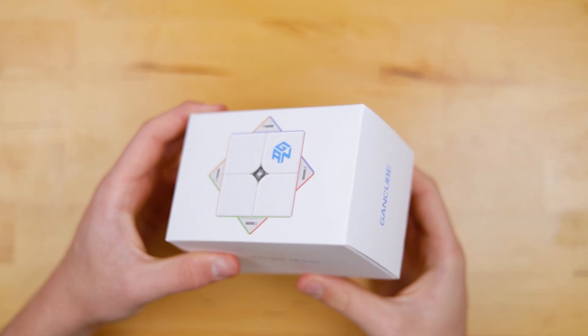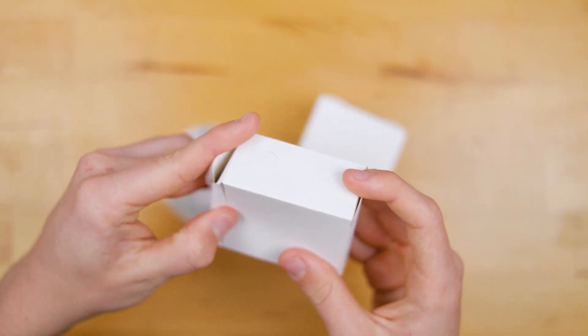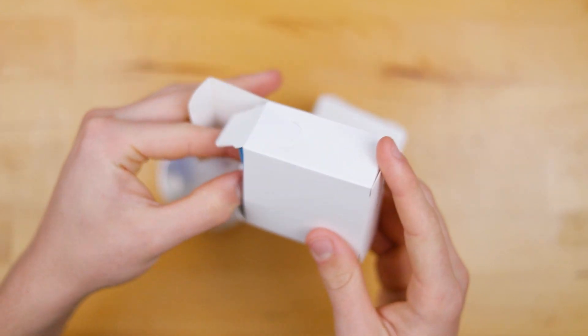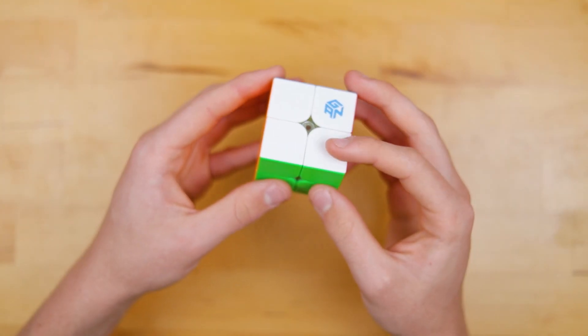Okay, now for the GAN 251M Air Pro. There are three versions of this: the Air, the Air Pro, and the Air Leap. Some different color GES nuts for the 2x2, and bam. Let's see how this goes.